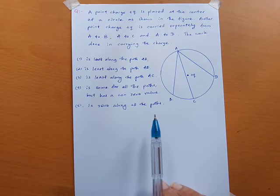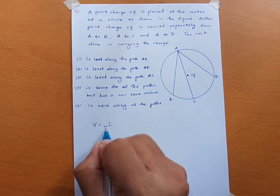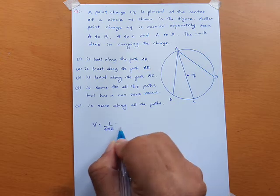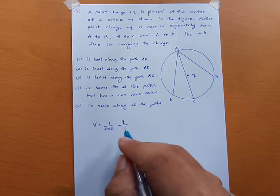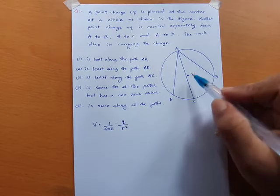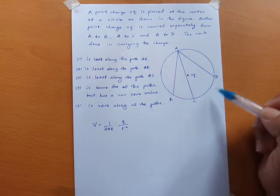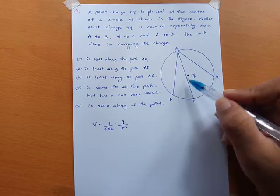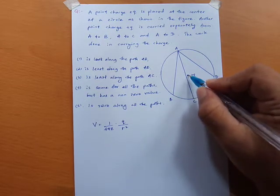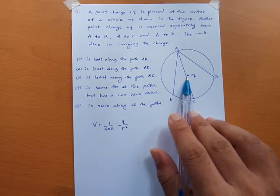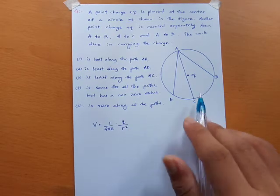To understand this problem, recall that the electric potential is given by V = (1/4πε₀)(Q/r). Since points A, B, C, and D all lie on the circumference of the circle, their distances from the center are all equal to the radius — let's call it 'a'.